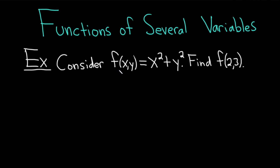Consider the function f of x,y equal to x squared plus y squared. Find f of 2 comma 3. So f of x,y is an example of a function of several variables. It has an input x comma y, and the output is x squared plus y squared. Let's go ahead and work this out.